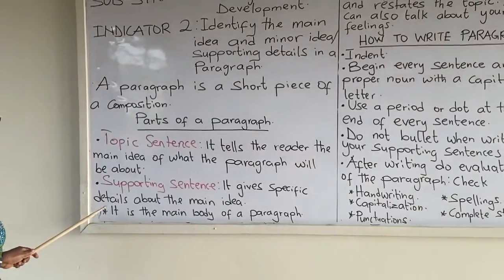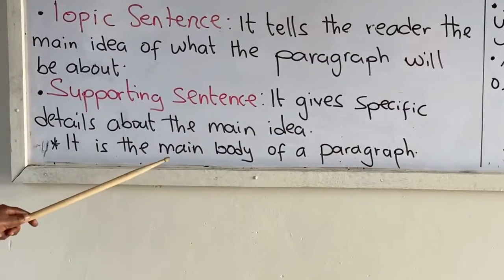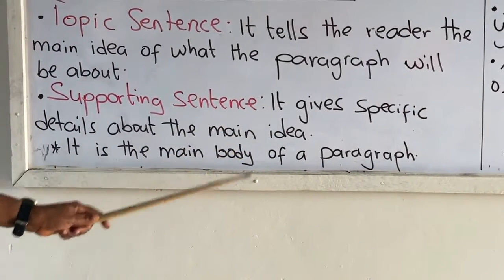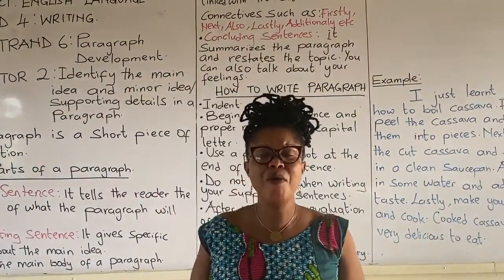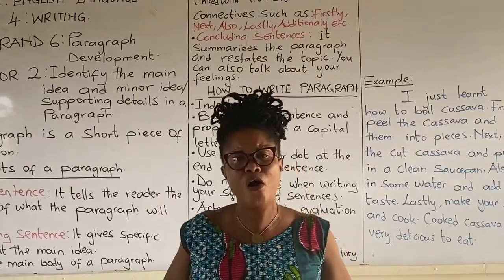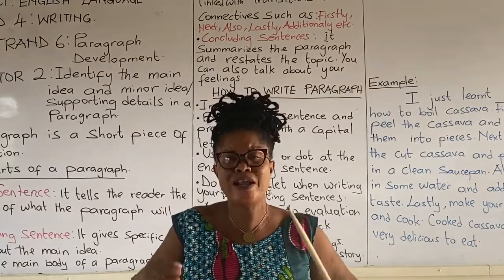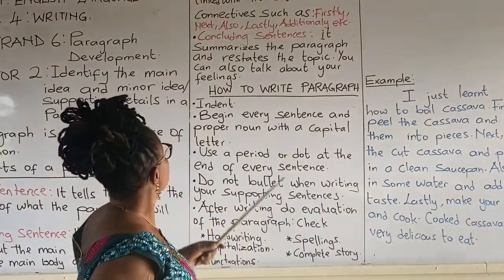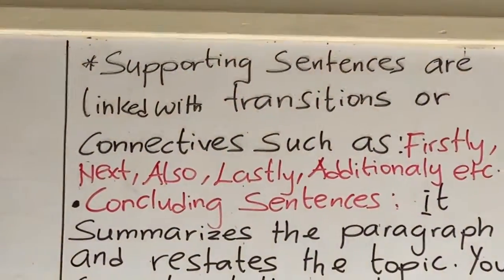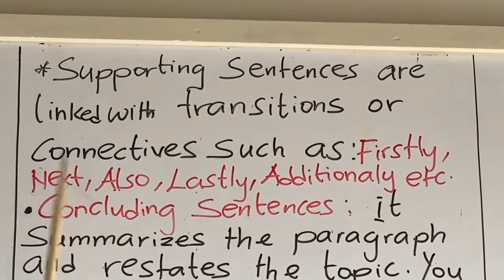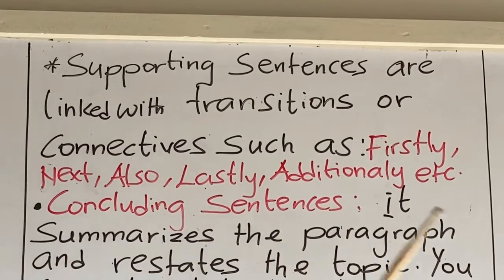The supporting sentence is also the main body of the paragraph. In a paragraph, we may have about three or four supporting sentences. These supporting sentences are connected with transitions or connectives such as: firstly, next, also, lastly, additionally, and so on.